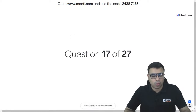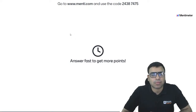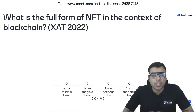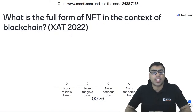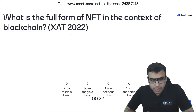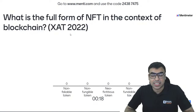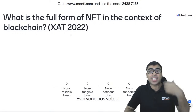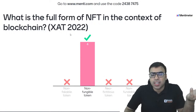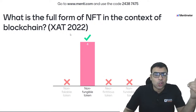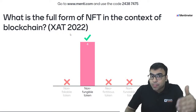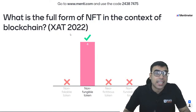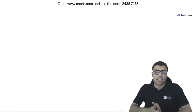Question number 17: what is the full form of NFT in the context of blockchain? This is a ZAT 2022 question. Options: non-faceable token, non-fungible token, a new fictitious token, non-fundable tax. NFT was also very much in the news in the budget this year. NFT stands for non-fungible token, so B is the right answer. I give previous year questions so you can analyze which types of questions they ask, to help you prepare in the right direction.